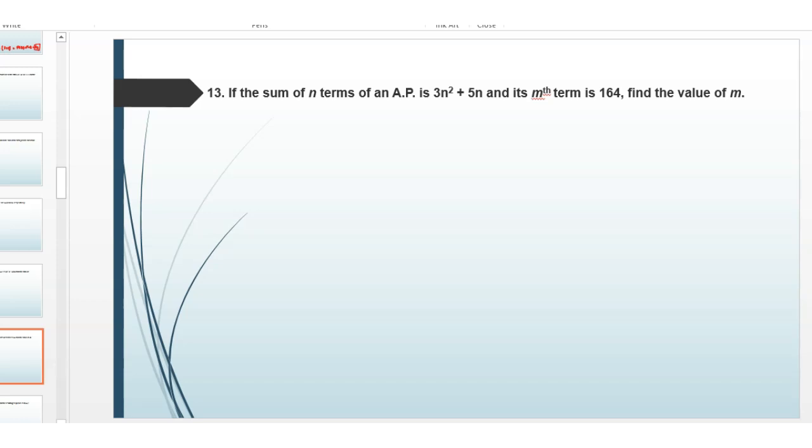Hello to everyone. Welcome back to my channel. Today's question is: if the sum of n terms of an AP is 3n square plus 5n and the mth term is 164, find the value of m.